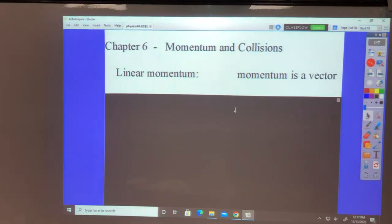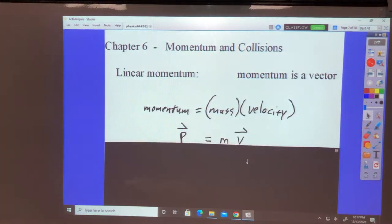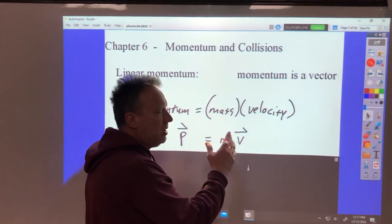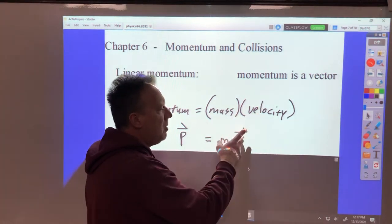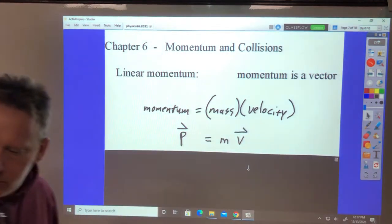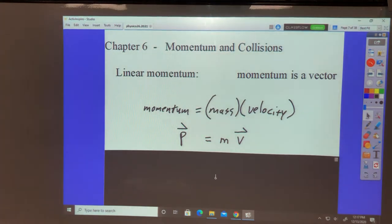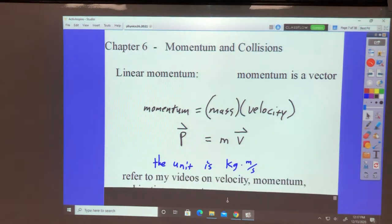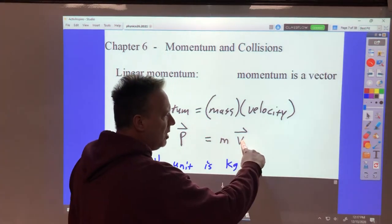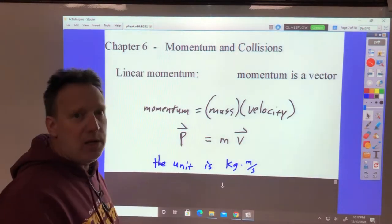Momentum is a vector. When you take a scalar like mass, which doesn't have a direction, and multiply it by a velocity, you get a momentum in the same direction. The unit is kilograms times meter per second, that's our MKS unit.